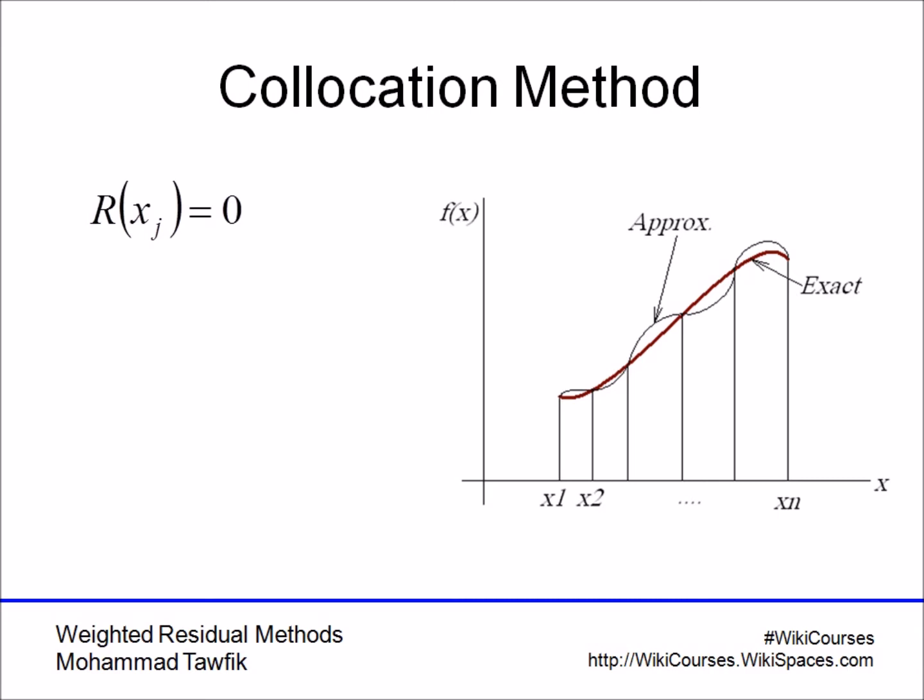because they are already satisfied. If you plug in X equals X_J in all the approximate functions, psi_i of x and g of x, here I called it f of x, you end up with a set of equations. Each equation is forced to be equal to zero at X_J.